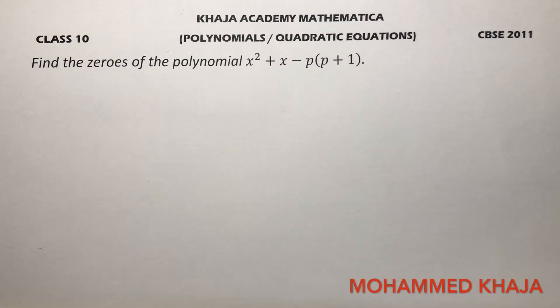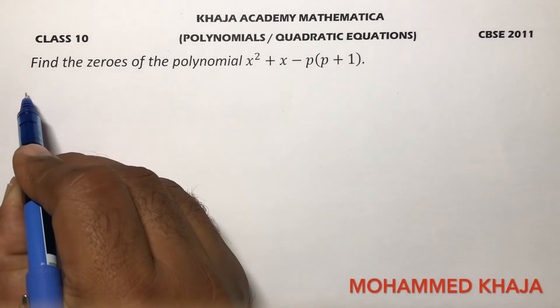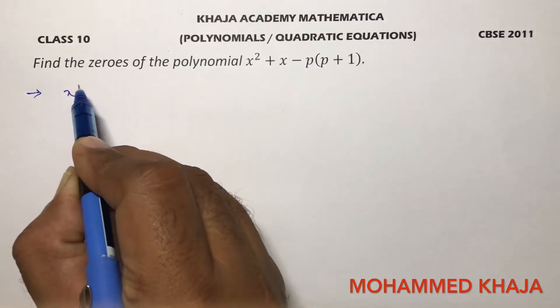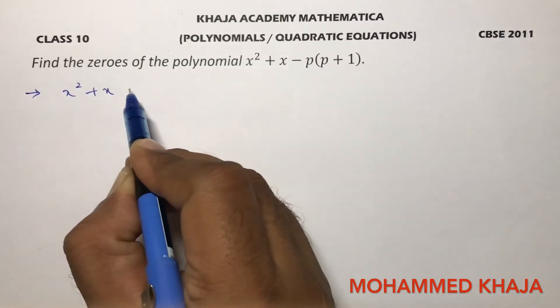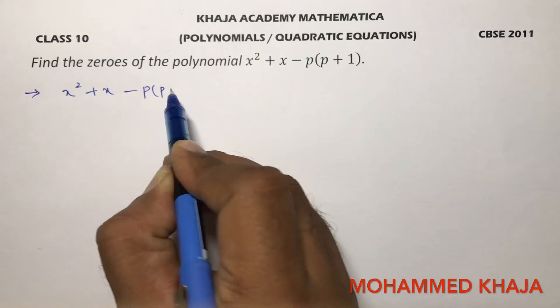Find the zeros of the polynomial x squared plus x minus p times p plus 1. To find the zeros of the polynomial, take the polynomial x squared plus x minus p times p plus 1.